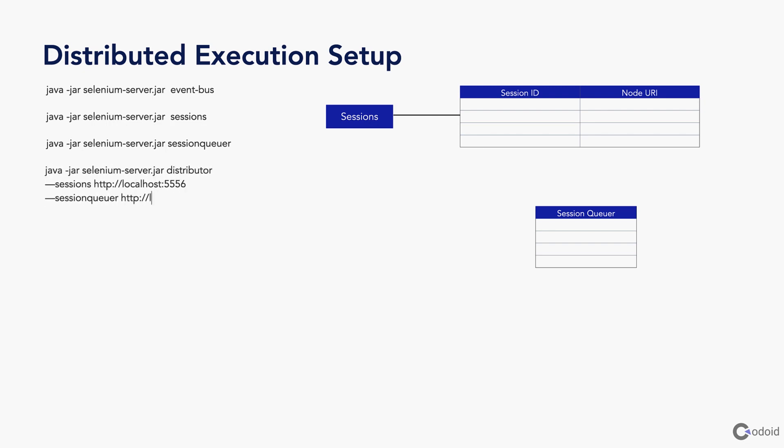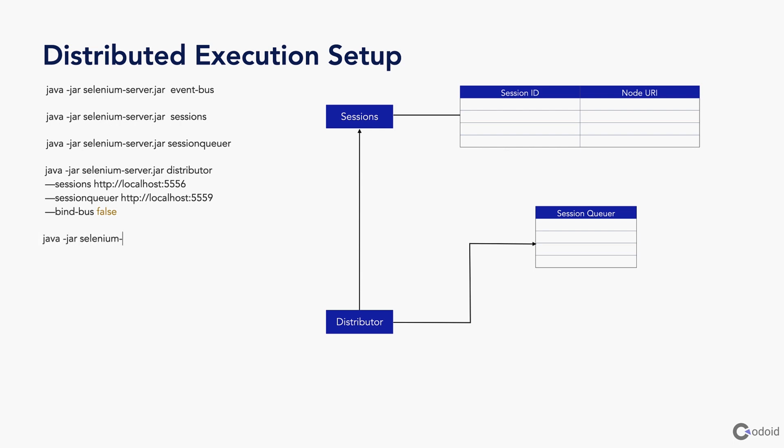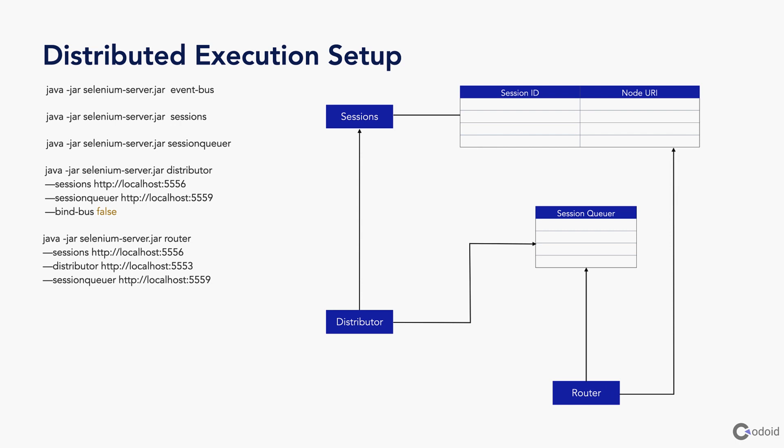The next component is the distributor. The distributor is responsible for creating the session, and the created session gets stored in the sessions map. After starting the distributor, you have to start the router. The router is the client-facing component in Selenium distributed execution — whatever session creation requests or commands you send go to the router. The router redirects the command to the appropriate component based on the command type.